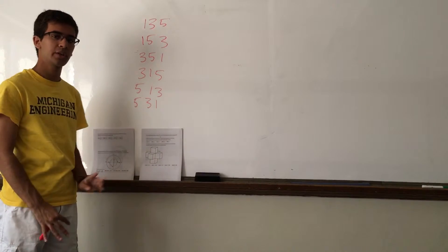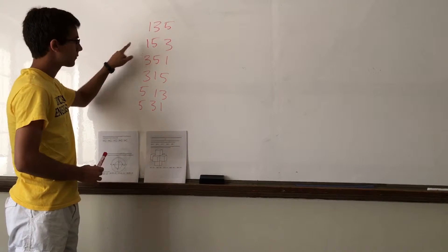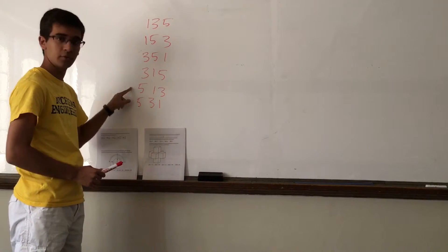These are the six possible combinations of a three-digit integer that contains 1, 3, and 5. As you can see, they're 135, 153, 351, 315, 513, and 531.